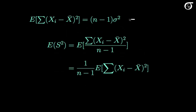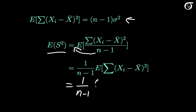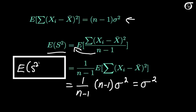So we just showed that the expectation of the numerator is n minus 1 times sigma squared. What we are looking for is the expectation of the sample variance s squared. Since n minus 1 is a constant we can take it outside the expectation, giving 1 over n minus 1 times n minus 1 times sigma squared, which equals sigma squared. Therefore the expectation of the sample variance s squared equals sigma squared, and we have shown that dividing by n minus 1 gives an unbiased estimator of the population variance. If instead we divided by n, that would result in a biased estimator.